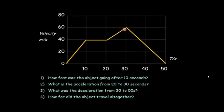What is the acceleration from 30 to 50? Change of speed goes from 60 to 0, so it's 60 meters per second change in a time of 20. So 60 divided by 20 would be 3 meters per second squared, and it might be a minus sign to show it's a deceleration. How far did the object travel altogether? You'd have to do it by working out the area under the graph. That would only appear on a higher paper.